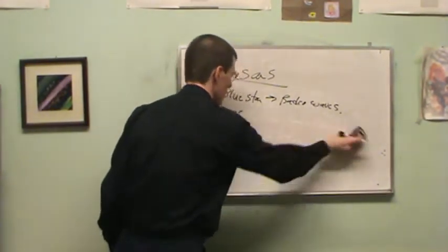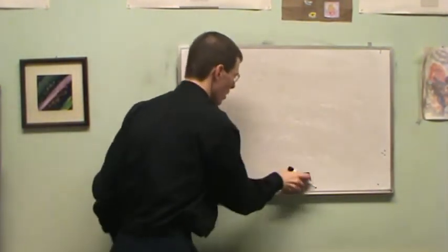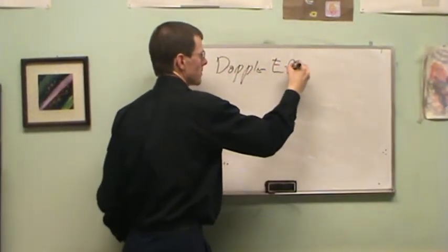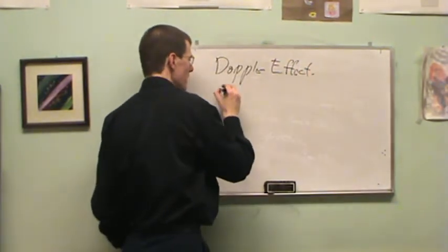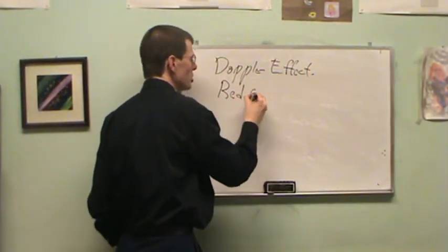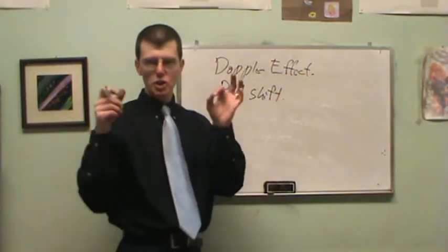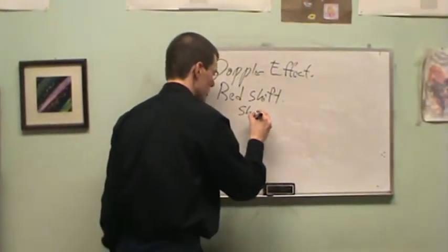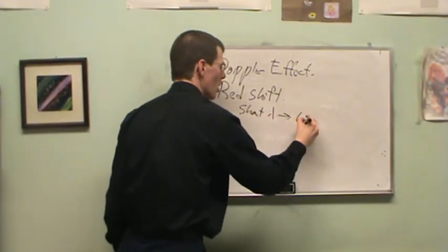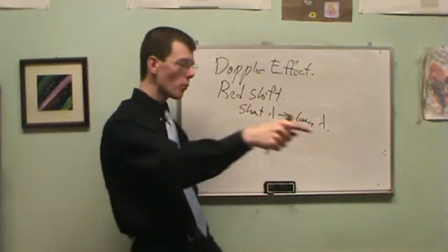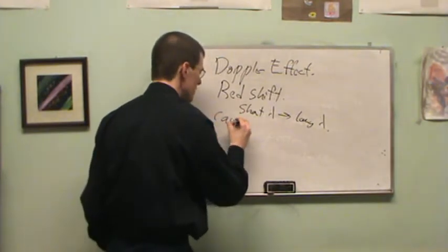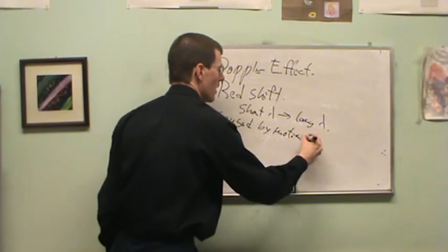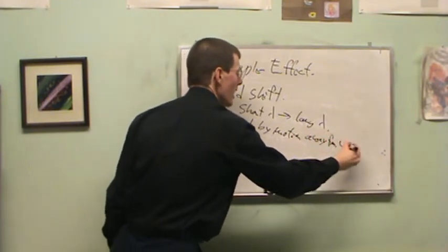Okay, so we've got these absorption lines. So the Doppler effect, Doppler effect, in this case is causing what we call a redshift. A redshift is where it takes short wavelengths and stretches them out into long wavelengths. Short wavelengths become long wavelengths as a result of motion away from us, caused by motion away from us.